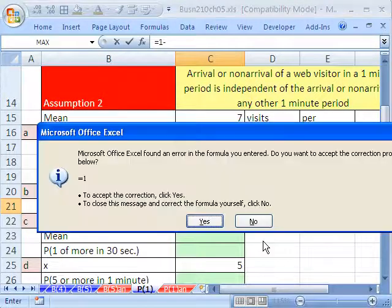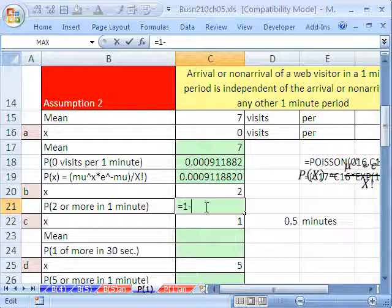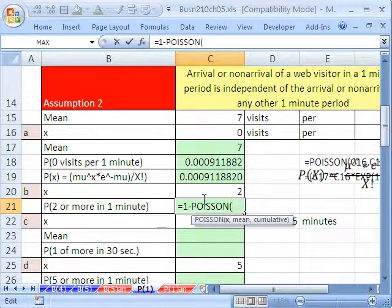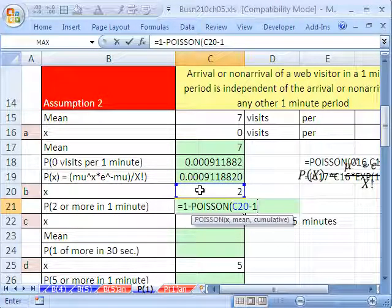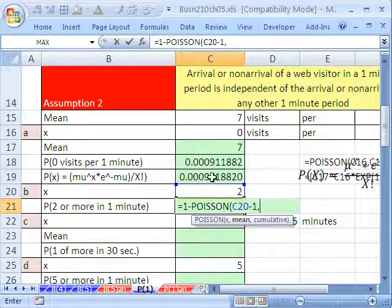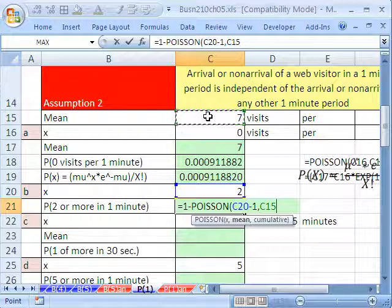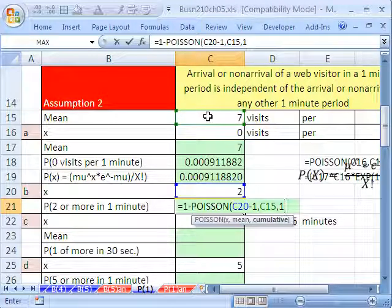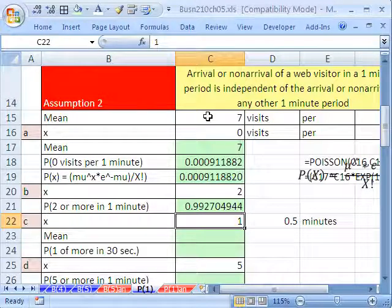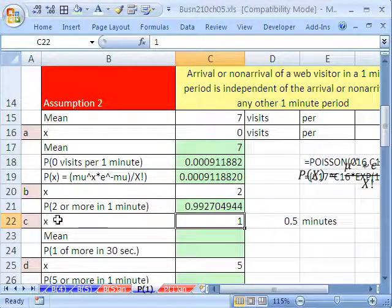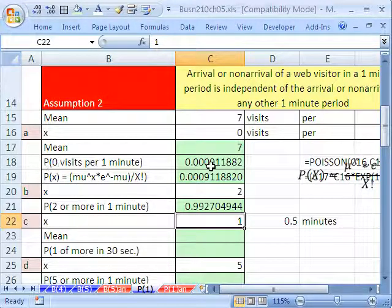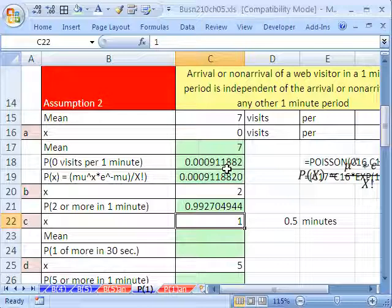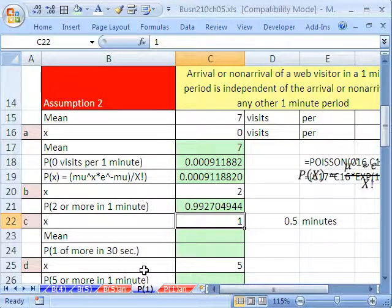Equals 1 minus, and we'll do our Poisson function, our x. Now, I have my 2 here, and I want to leave it there. So I'm going to put 2 minus 1 to get to the number right below. Comma, the mean is going to be 7. And now we want 1 for cumulative. Close parentheses. Enter. And so that's the probability that we will get 2 or more in 1 minute. So if we're getting 0 hits in 1 minute, and this is the probability, we're going to check into it because that means there's some problem. Very improbable that no one would be visiting our cool website.